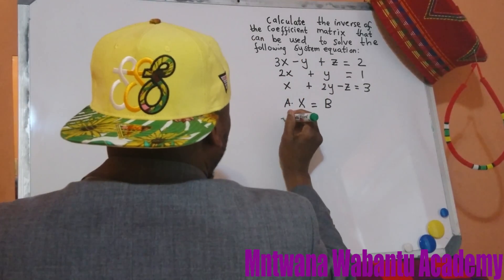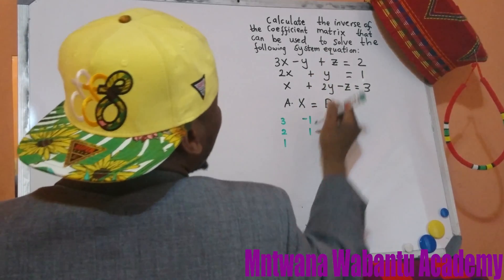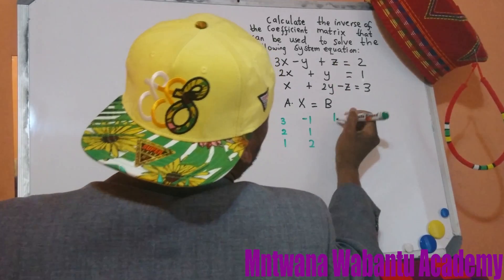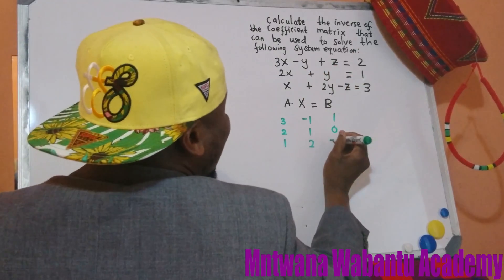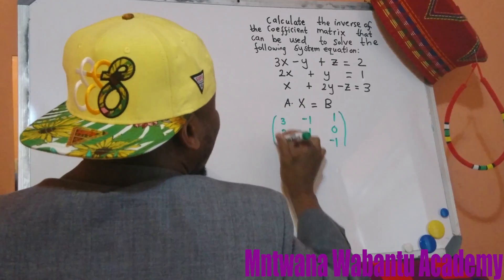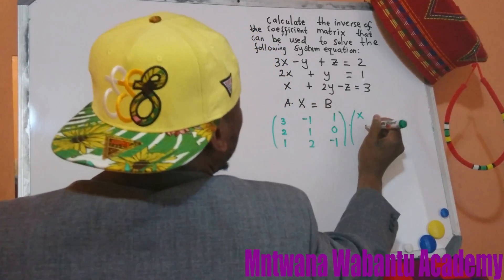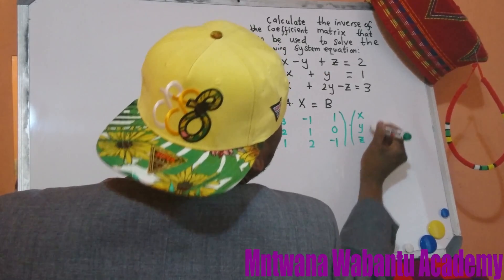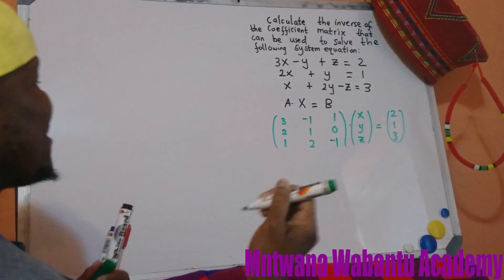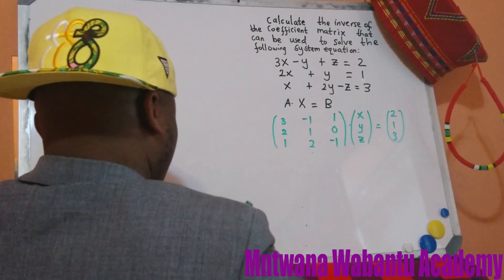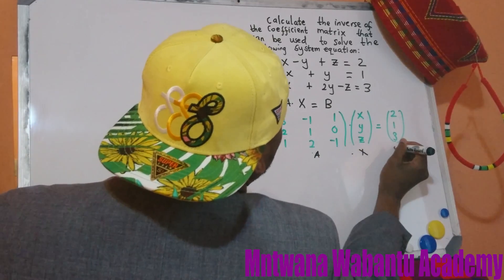So I'm going to write my matrix. This is going to be 3, 2, 1 - these are the X coefficients. For Y, the values are negative 1, 1, and 2. Now for Z, on the top row it's 1, but we don't have a Z in the second row, so I'm going to put zero there, and the third row has negative 1. This is matrix A. And X represents X, Y, and Z, and B is 2, 1, and 3.